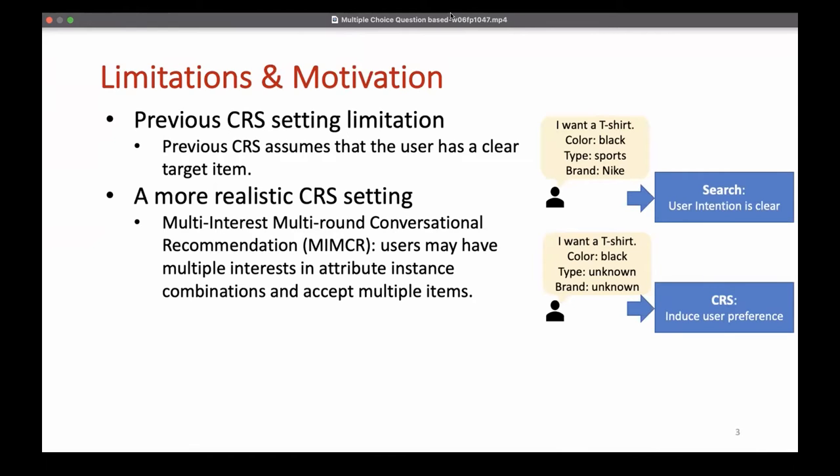For example, for color type, the user may accept both red and black. Therefore, users may have multiple interests in attribute instances combinations and accept multiple items with potentially overlapped combinations of attribute instances.